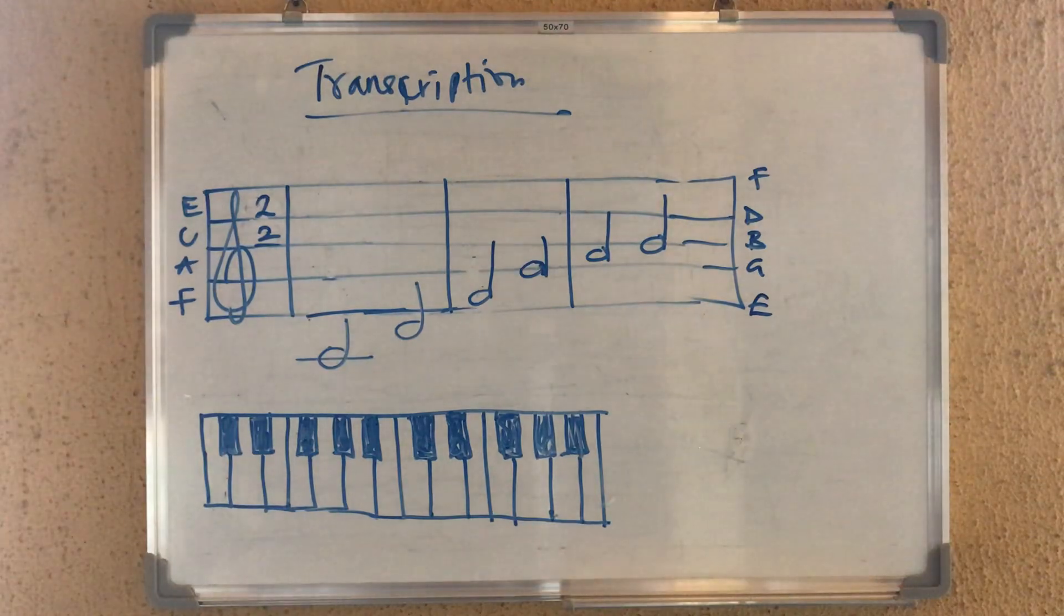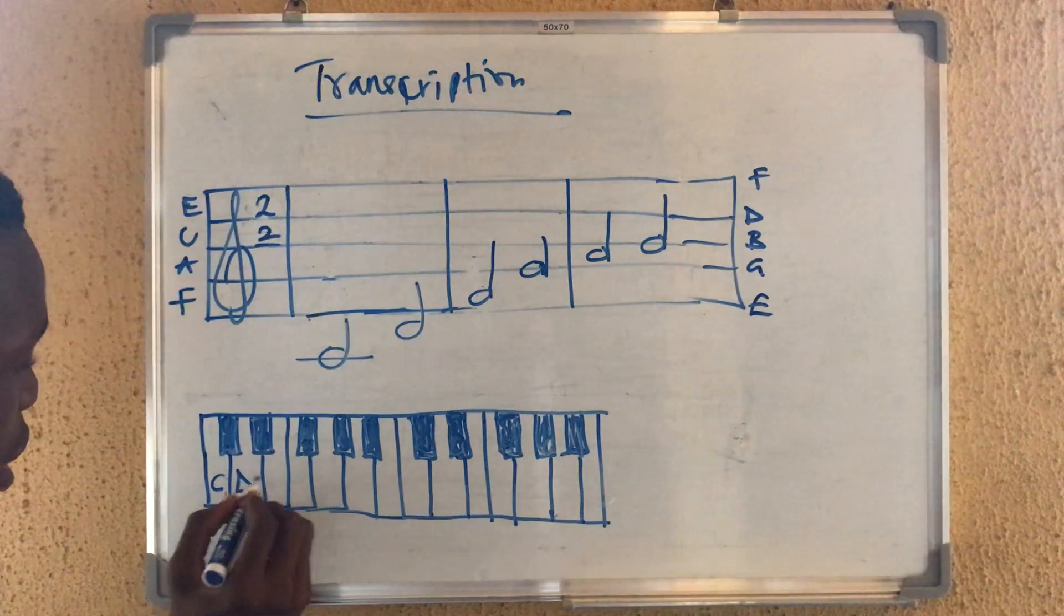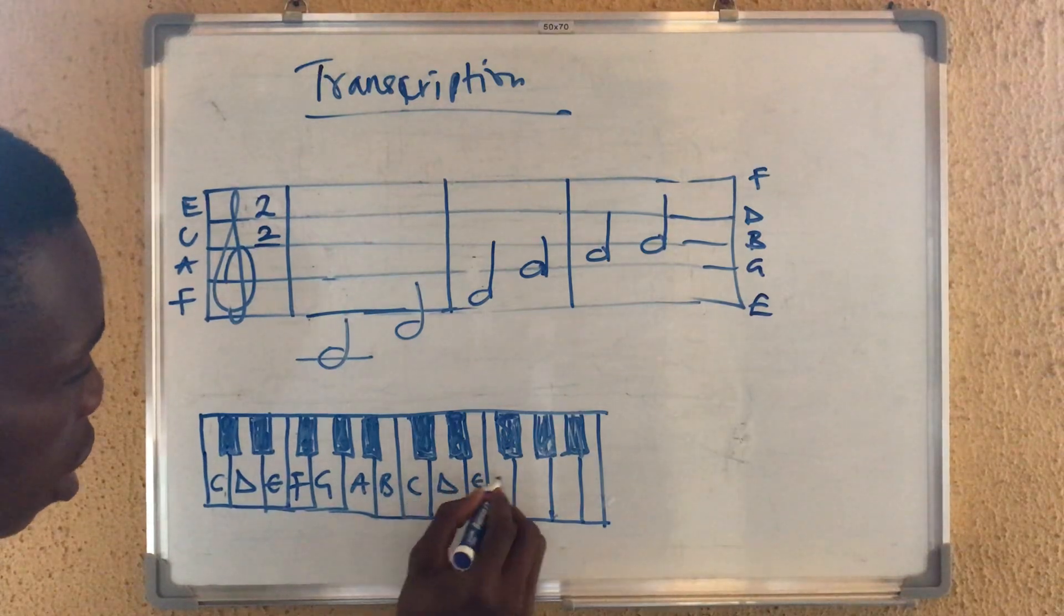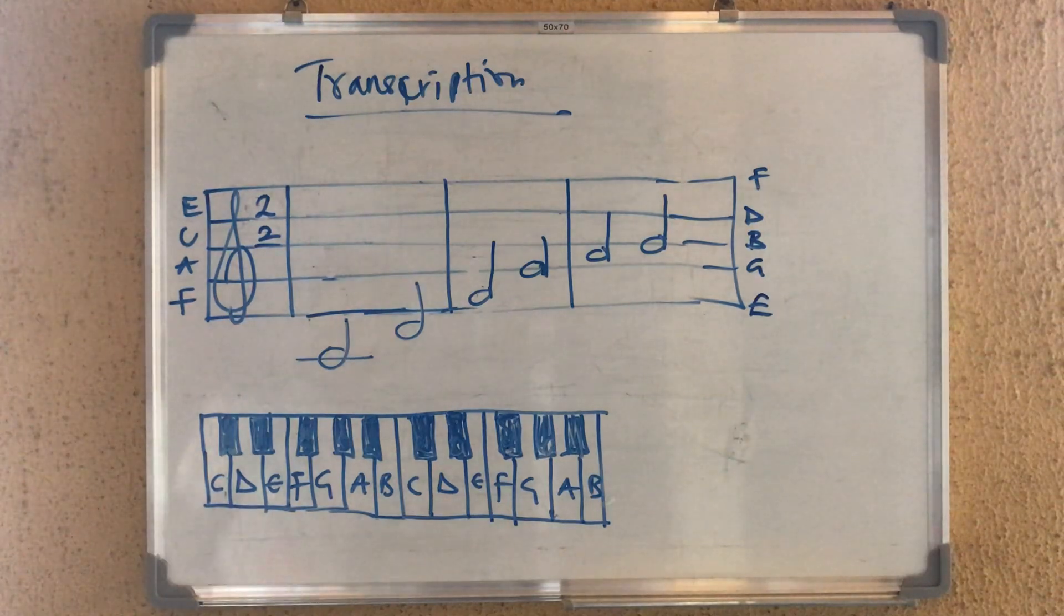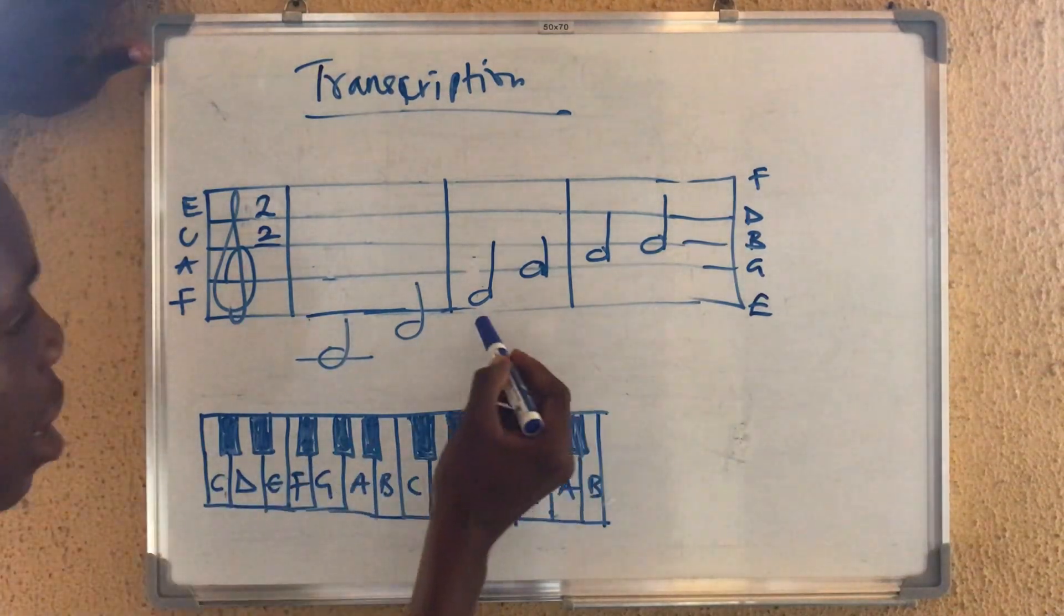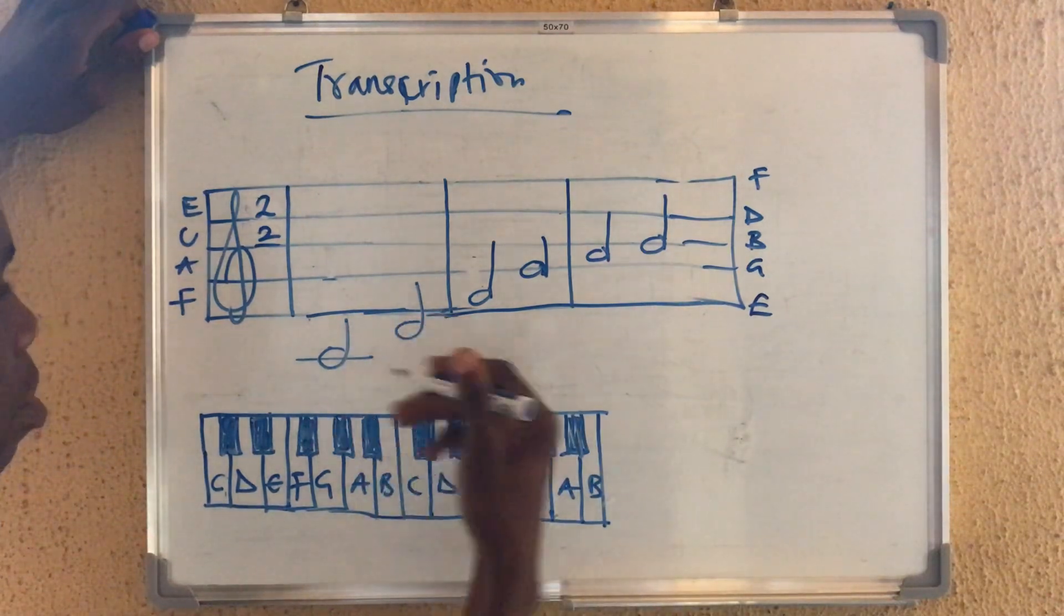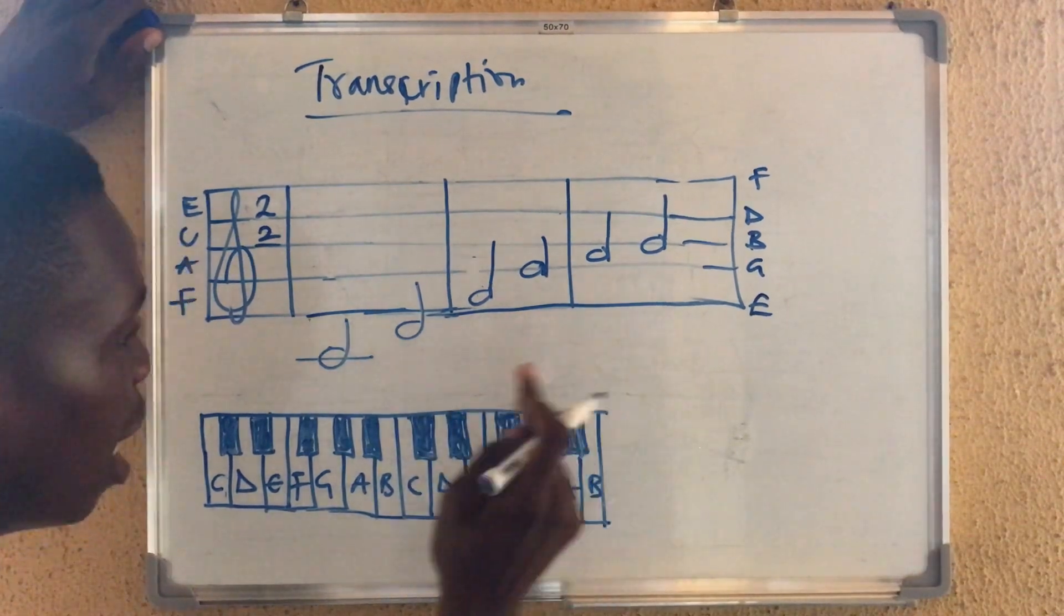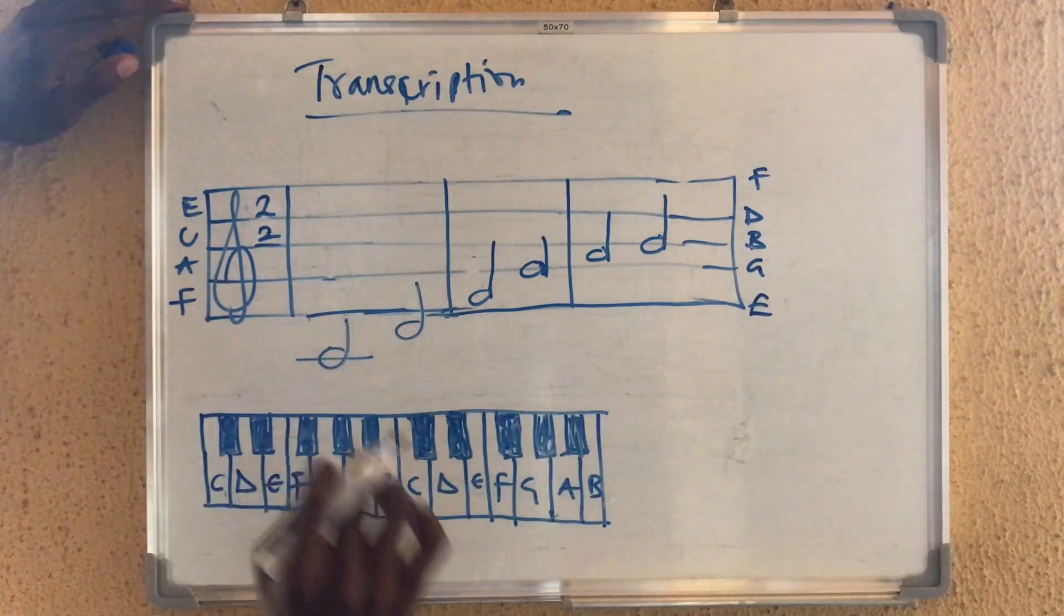This is your piano now. Here is key C, here is D, here is E, here is F, here is G, A, B, C, D, E, F, G, A, B. You understand now. Then, like I told you before, this line is E line. So what comes before E? There is a space here and that space is called D. And for you to have any other line here, you put a ledger line.